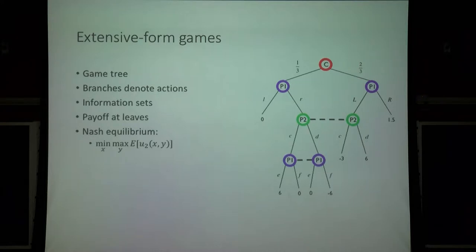Given this setup, a Nash equilibrium — since it's a zero-sum game — is really just a solution to this min-max problem. Player one minimizes over their strategy vector x, player two maximizes over their strategy vector y, and the objective is the expected utility for player two given the choice of strategies.